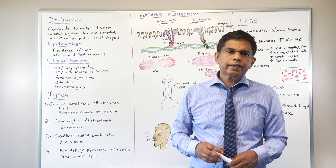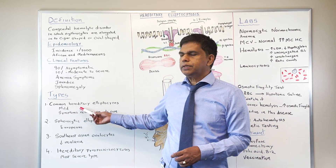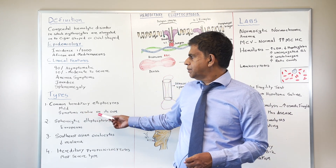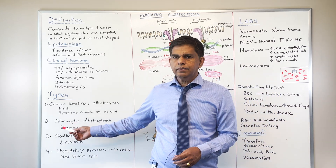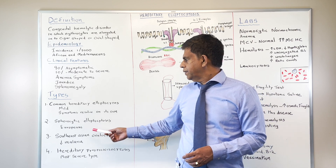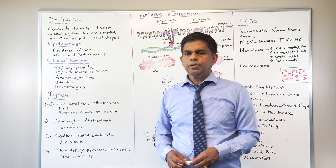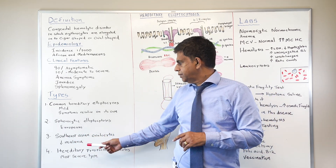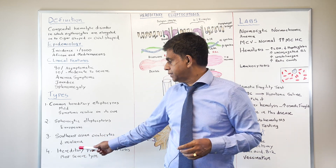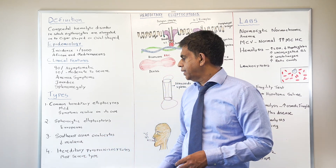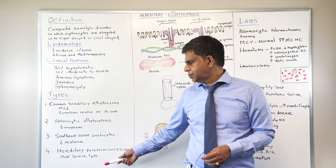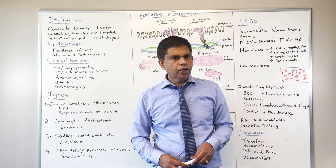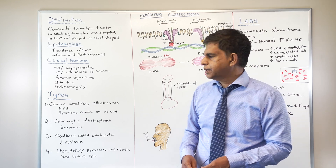When it comes to types, there are four we need to know. First is common hereditary elliptocytosis — mild, symptoms resolve on their own. Second is spherocytic elliptocytosis, more common in Europe, also mild symptoms. Third is Southeast Asian ovalocytosis, which appears to provide some protection against malaria. The fourth — the one to pay the most attention to — is hereditary pyropoikilocytosis, the most severe type, with very common hemolysis.